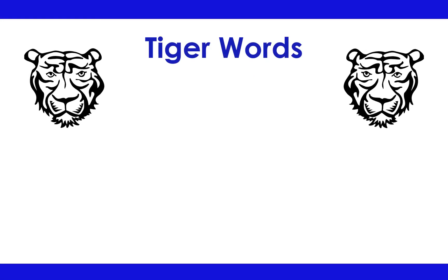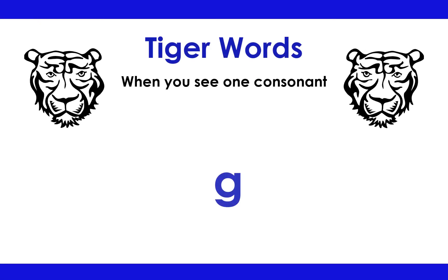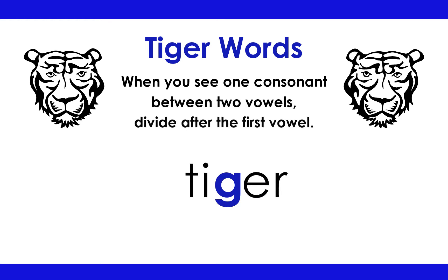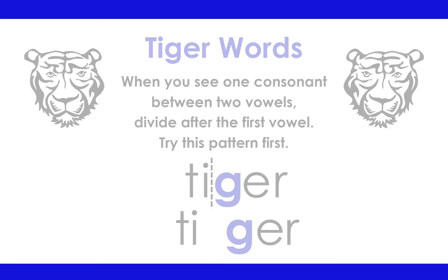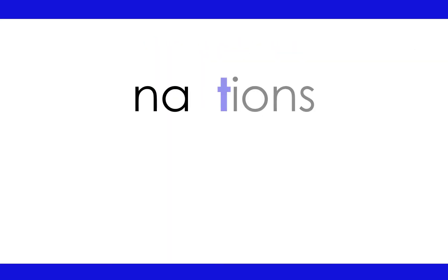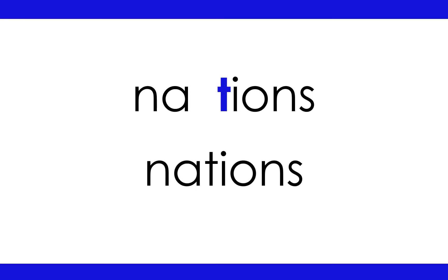Tiger Words: When you see one consonant between two vowels, divide after the first vowel. Try this pattern first. Tiger: Ti-ger. Nations: Na-tions.